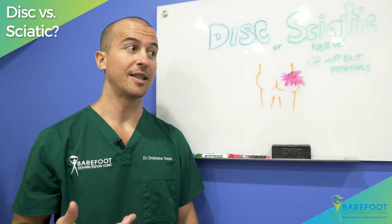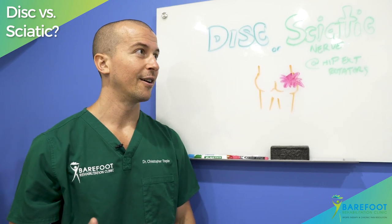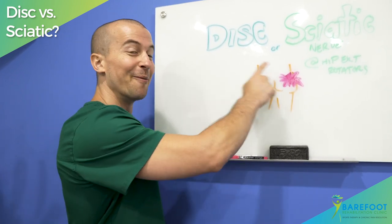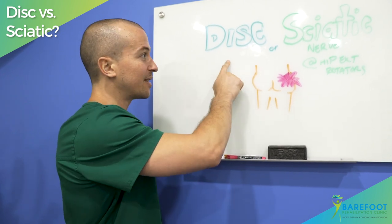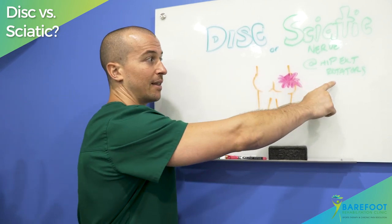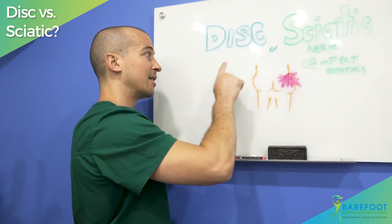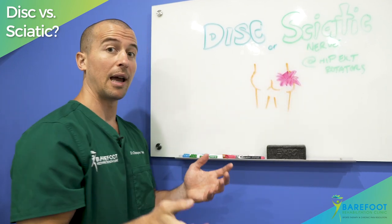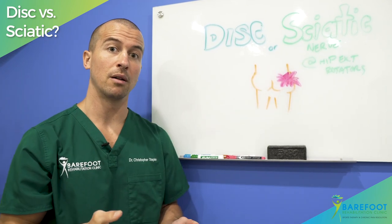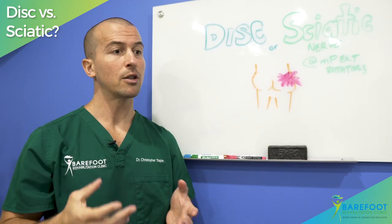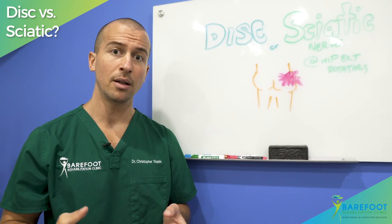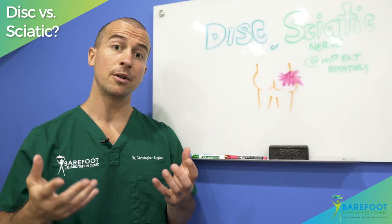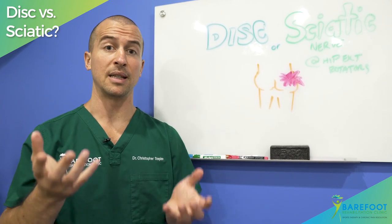And here's the wrench — it can be a little bit of both. It could be a hundred percent disc and zero percent sciatic nerve, or a hundred percent sciatic nerve and zero percent disc. It could be 50-50 and vice versa. This is what a skilled diagnostician and manual therapist will help you determine: how much of your problem is each one.